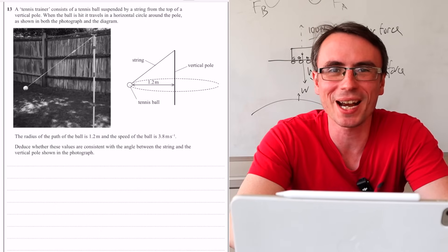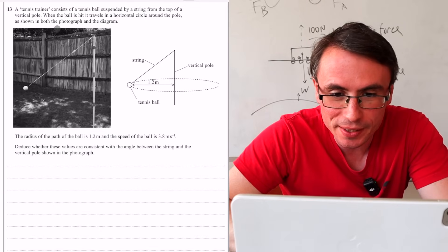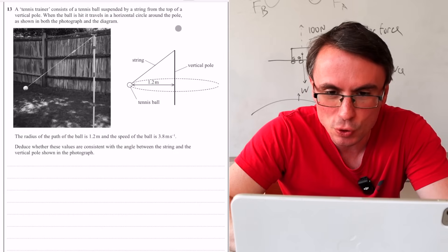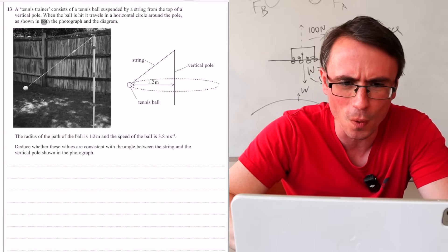Let's do some important A-level physics practice. We have a tennis trainer consists of a tennis ball suspended by a string from the top of a vertical pole. How interesting.